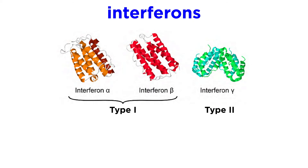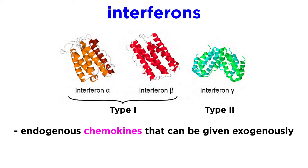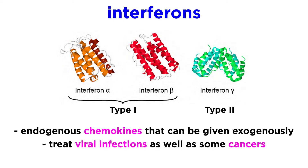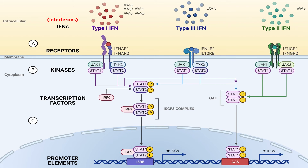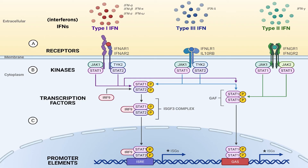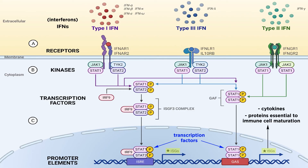Finally, we can briefly discuss interferons. Interferons, like interleukins, are a large family of endogenous chemokines that are sometimes given exogenously for some viral infections, as well as some cancers, to enhance the immune response against viruses and tumor cells. The primary mechanism interferons elicit is through the interferon receptor located on the plasma membrane of most white blood cells. Following a complex intracellular signaling cascade, interferon regulatory factors are activated. These are transcription factors that increase the protein production of various immune-stimulating proteins, such as cytokines, and proteins essential for the development and maturation of natural killer cells, B and T cells.